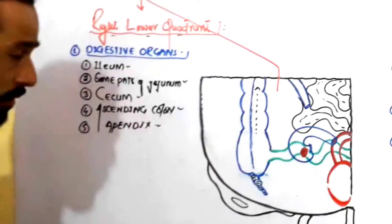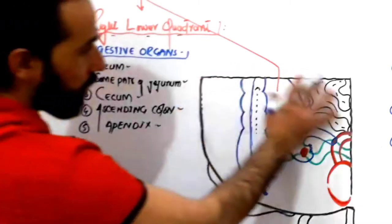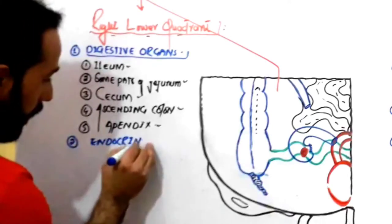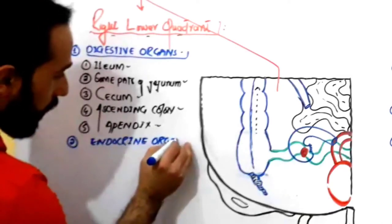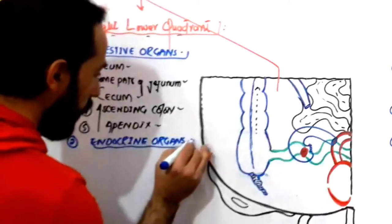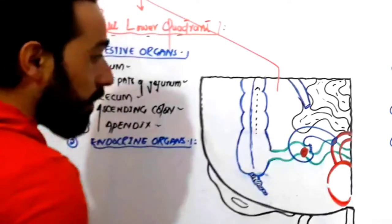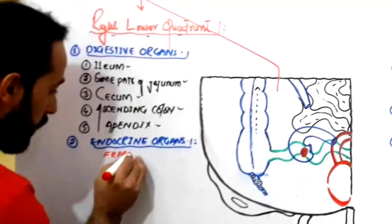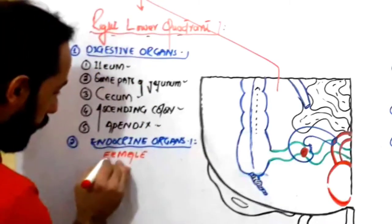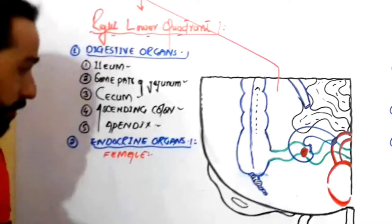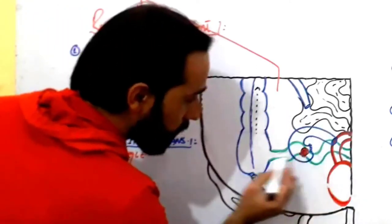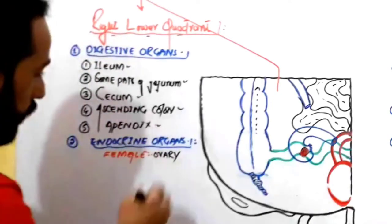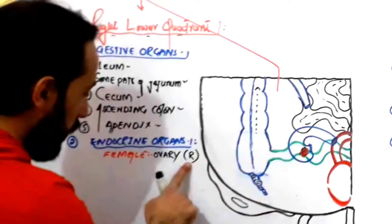The next group of organs: are there any endocrine organs in the right lower quadrant? Yes — look carefully, in the case of females, we have the ovaries here. The ovaries are very important and play their role in the endocrine activity of the body. The right ovary is found in the right lower quadrant.